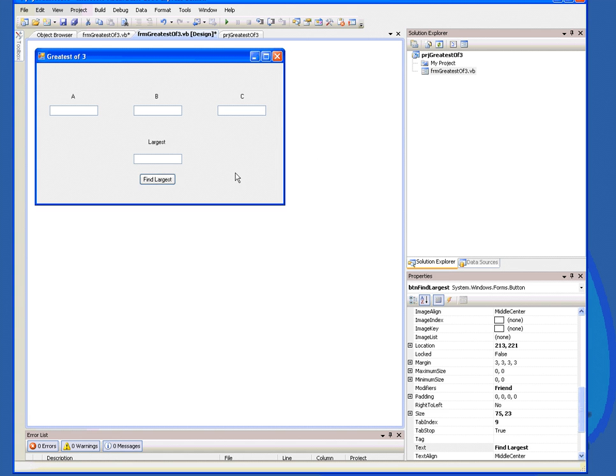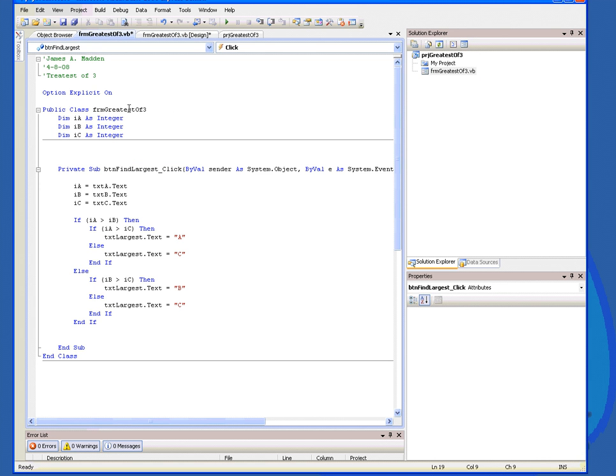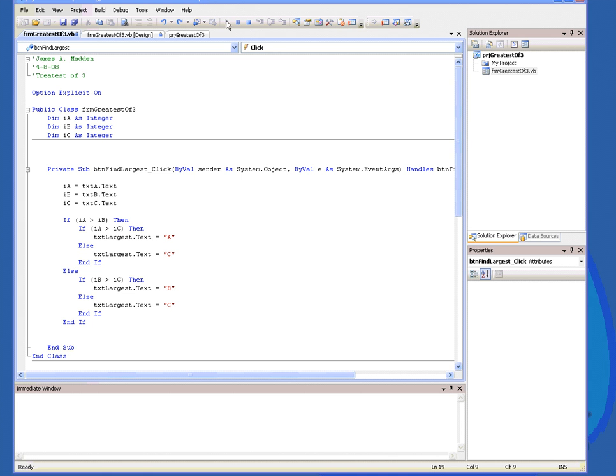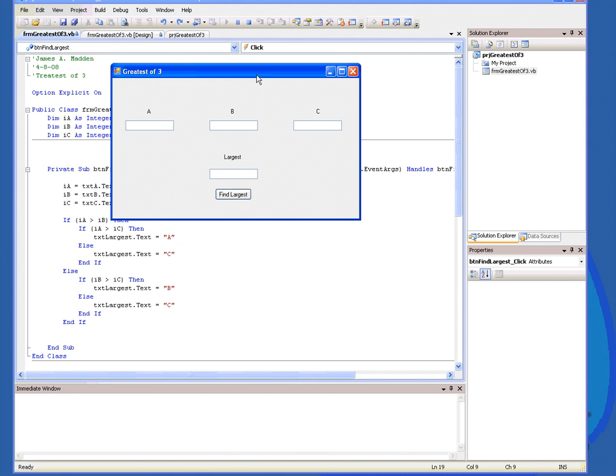Okay, as you can see in this program, we have box A, B, C, and largest here, and find largest. Let's look at the code. I've already got the code written for us right here. And I've just simply typed it in ahead of time. Let's take a look at what it looks like here. So I'm going to start it. Give it a second to start up. And it went off screen, so I'll bring it back on here so you can see it. There we go.